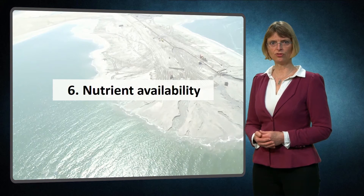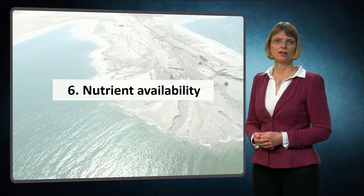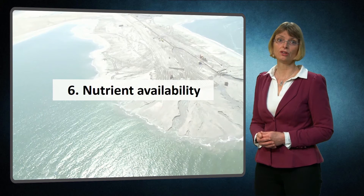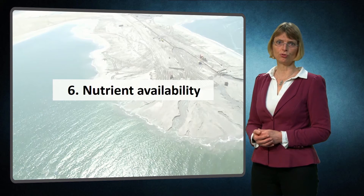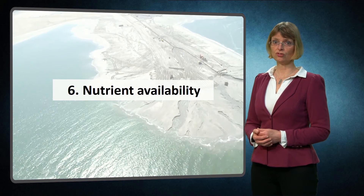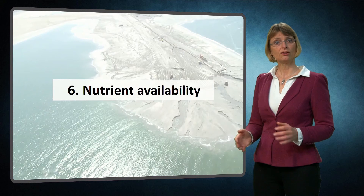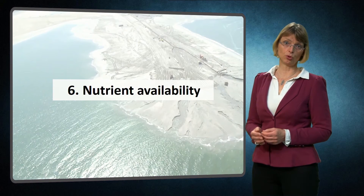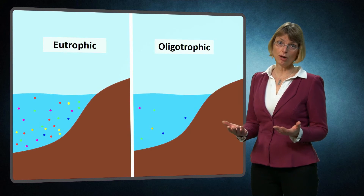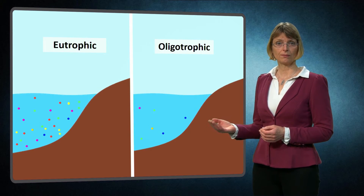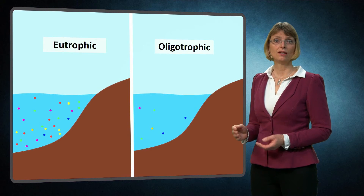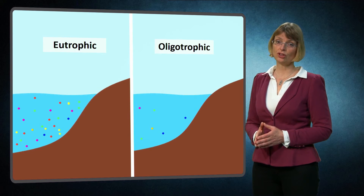Finally, the sixth important abiotic factor is nutrient availability. Inorganic nutrients and minerals such as nitrogen, phosphorus and iron are necessary for the growth and survival of plants and phytoplankton. The amount of nutrients in the system can depend on the soil type, the upwelling of nutrient-rich deep waters and river runoff. Systems with a high amount of nutrients are termed eutrophic, and systems with a low amount of nutrients are termed oligotrophic. These systems are usually associated with clear water.